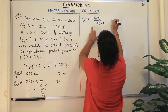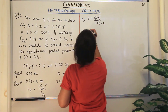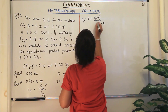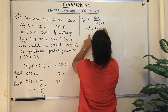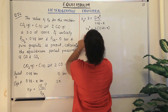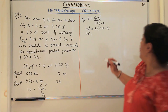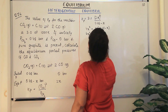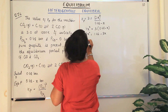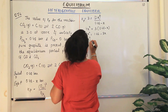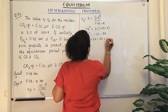Expanding this equation: 4x² = 3 × (0.48 − x), which gives 4x² = 1.44 − 3x. Bringing all terms to one side, we get the quadratic equation: 4x² + 3x − 1.44 = 0.